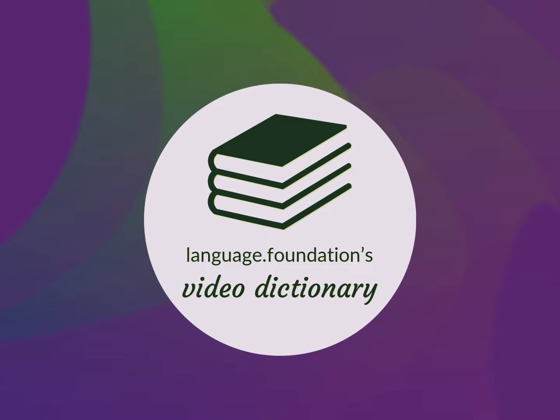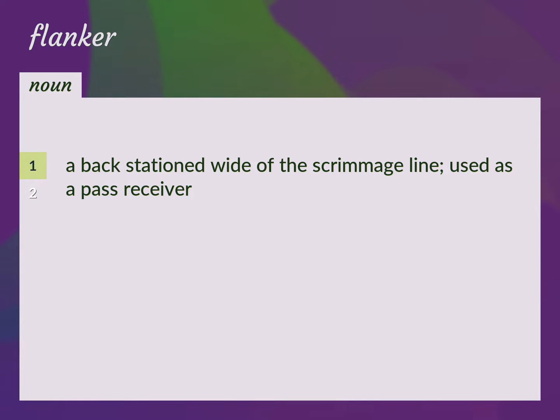Language.Foundation's Video Dictionary, helping you achieve understanding. Flanker back: a back stationed wide of the scrimmage line, used as a pass receiver.